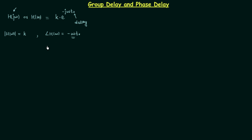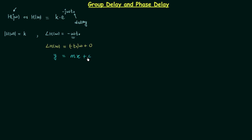Rewriting this equation: the phase of H(ω) is equal to minus T0 times ω plus 0. Here minus T0 is a constant, not depending on any parameter in the network. Therefore the phase of the transfer function depends on angular frequency in a linear manner. This equation is in the form Y = Mx + C, where C is the intercept and equals 0, meaning our straight line passes through the origin.